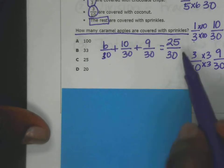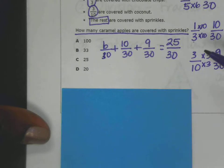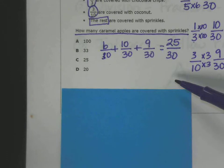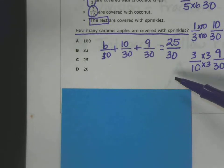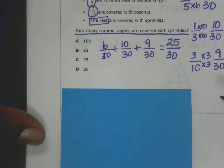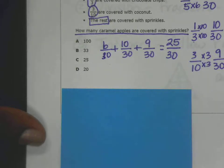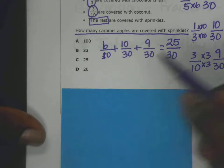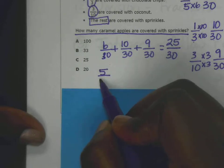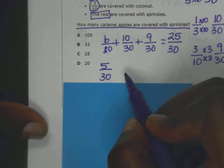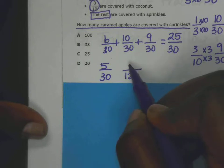She has 120 apples total. So 25 out of 30 have peanuts, chocolate chips, or coconut. We're looking for the ones covered with sprinkles. The difference between 30 and 25 is the ones that have sprinkles. So that's 5 out of 30, but I want to know how many out of 120.